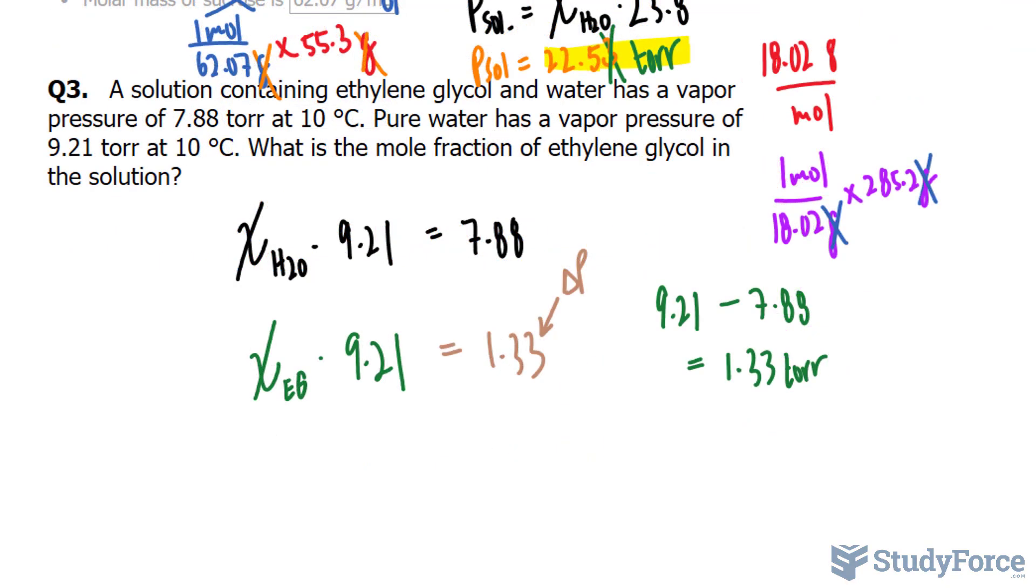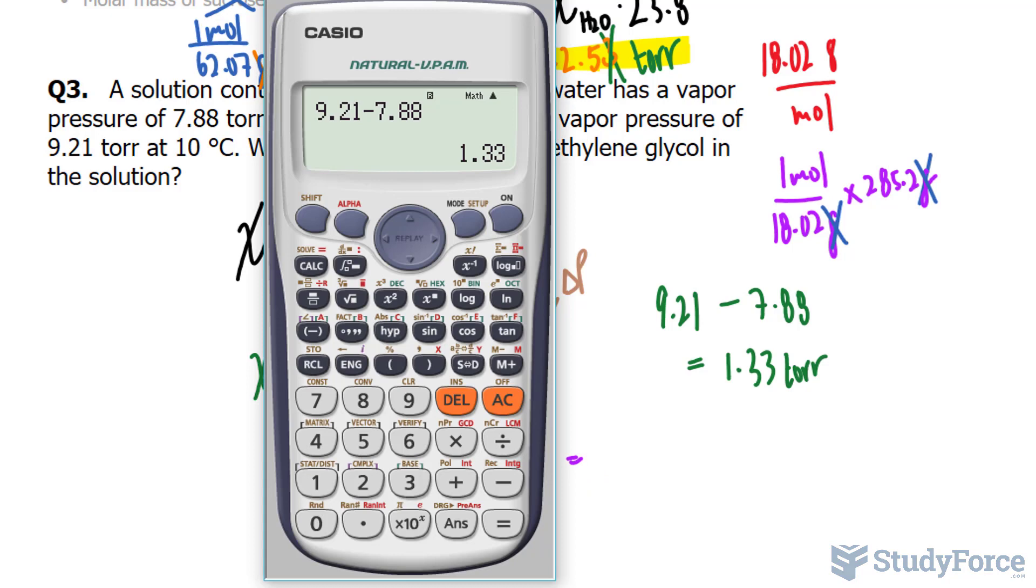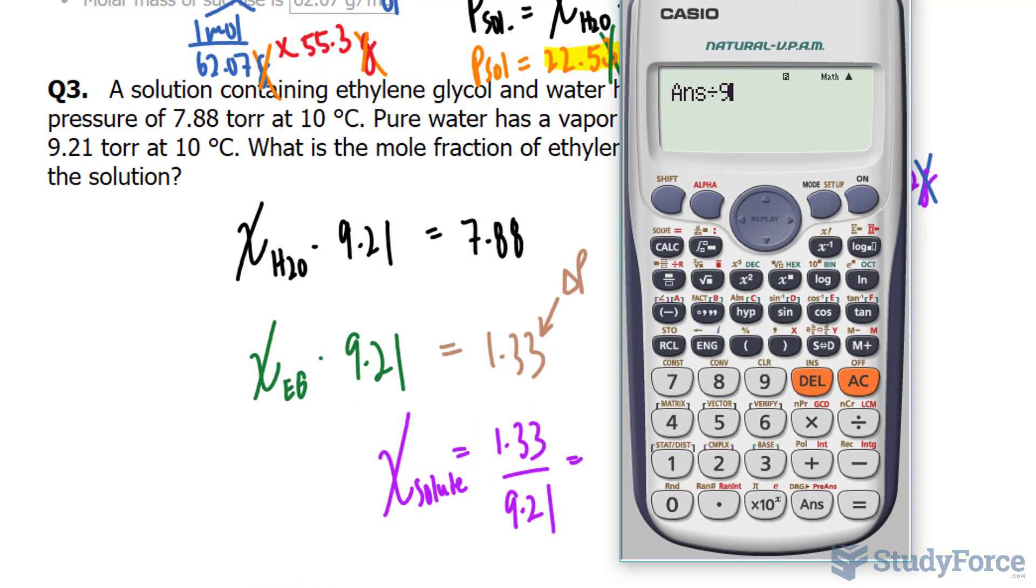By dividing both sides by 9.21, I end up with my mole fraction of the solute. Let's use our calculator once more, divide that number by 9.21. It gives us 0.144 to 3 significant figures. We stop writing after the second 4.